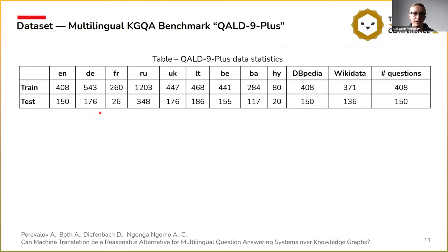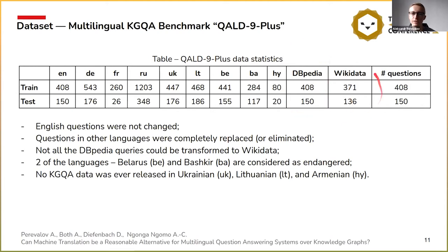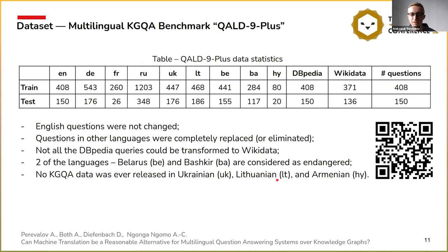Here is our dataset used for evaluation. We have data in nine languages: English, German, French, Russian, Ukrainian, Lithuanian, Belorussian, Bashkir, and Armenian. This data is available for both DBpedia and Wikidata. A key feature of this evaluation is that two of the languages are considered endangered by UNESCO, and no knowledge graph question answering data had ever been released for Ukrainian and Armenian languages. You can access this dataset using the provided link or QR code.